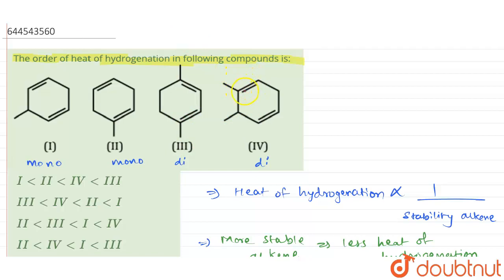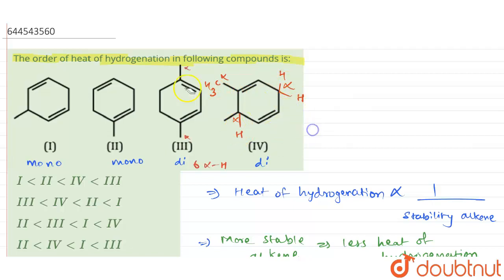For compound 3, the alpha positions give one hydrogen at one alpha position and three hydrogen atoms from a methyl group at the other. We also have two more alpha hydrogen atoms, giving a total of three plus one plus two, which equals six alpha hydrogen atoms for compound 3.